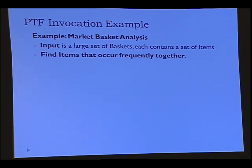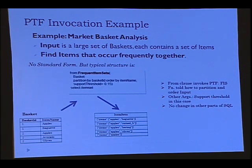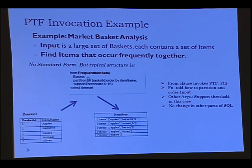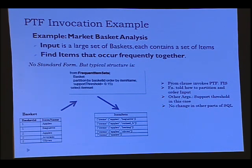How does a PTF invocation look in SQL? Going back to the market basket example: the input is a basket table, where each row represents an item within a basket. What you want as output is item sets which appear frequently in these baskets. You invoke this function called 'frequent item sets', tell it the input is this basket table, how to divide and partition the data, and then give other arguments — in this case, a support threshold, saying items of interest should appear in at least 15% of the baskets. A function can appear anywhere a table does, and then you can write regular SQL. All it's doing is outputting what the function has computed.